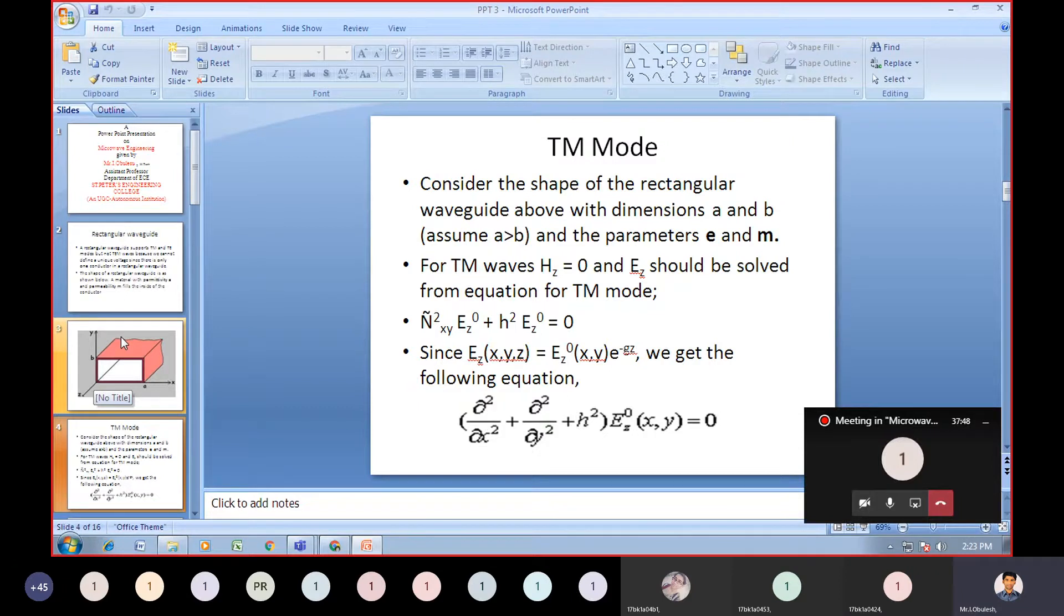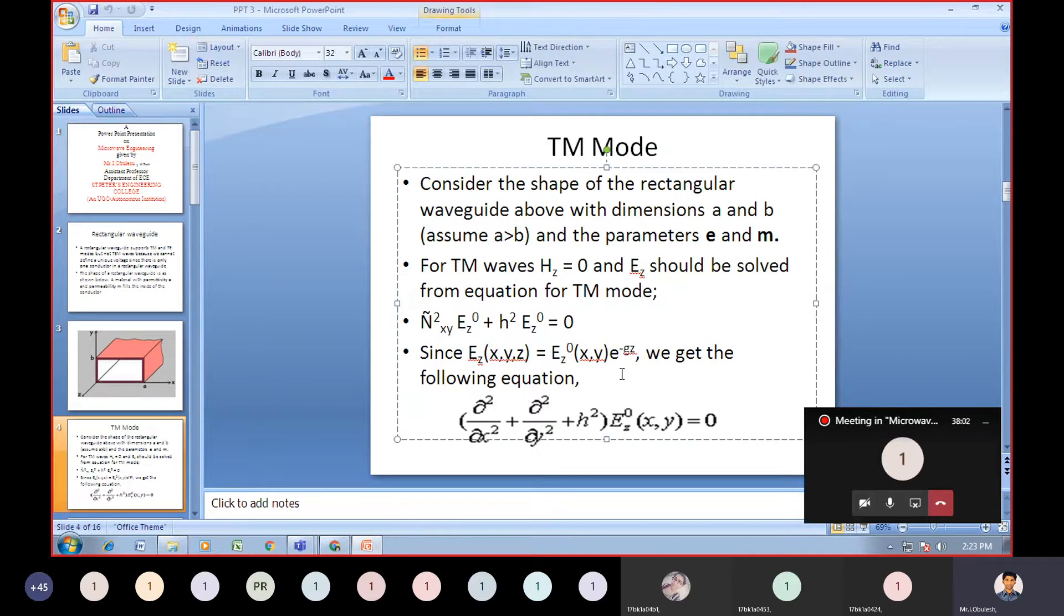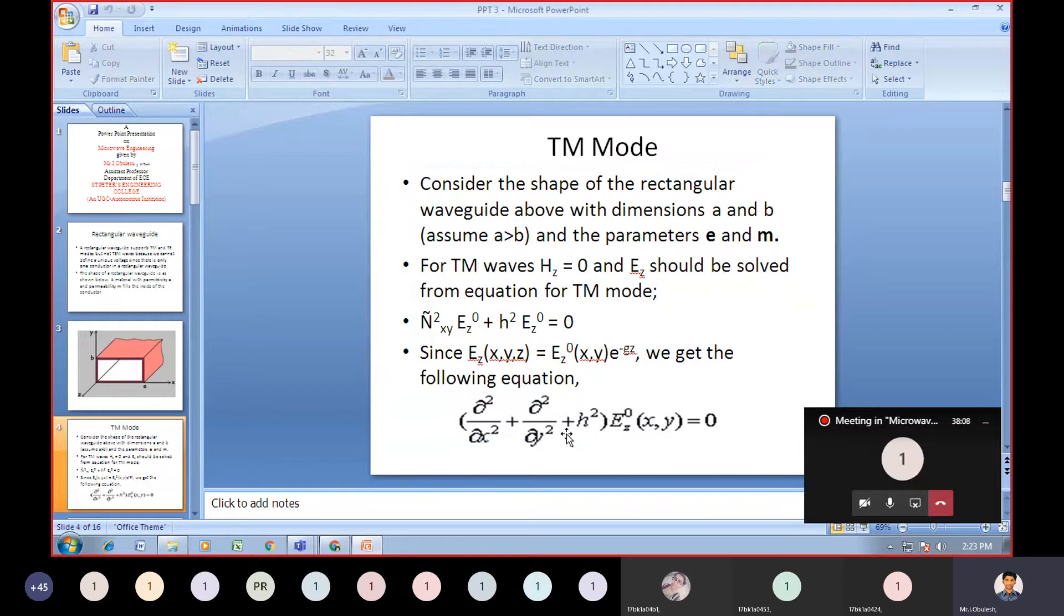Since E_z of (x,y,z) equals E_z0 of (x,y) times e to the power minus gamma z, we get the following equation: d²E_z0/dx² plus d²E_z0/dy² plus H² times E_z of (x,y) equals zero.